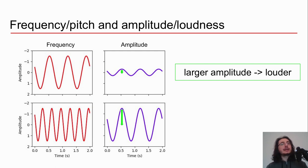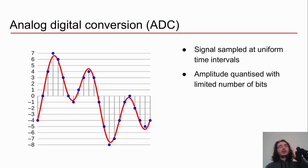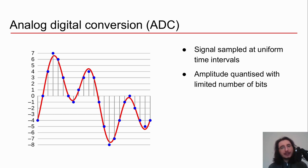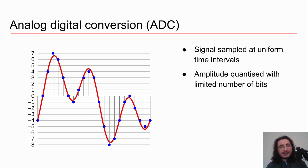An important point: when we talk about acoustic sound waves — like the sound of a voice or a piano — these are continuous, analog waveforms. Obviously we can't store analog waveforms; we need a way of digitalizing them. For that, we use the analog-to-digital conversion process, or ADC. When we do ADC, we perform two steps: the first is called sampling, where we sample the signal at specific time intervals, and the second is quantization, where we represent the amplitude with a limited number of bits.